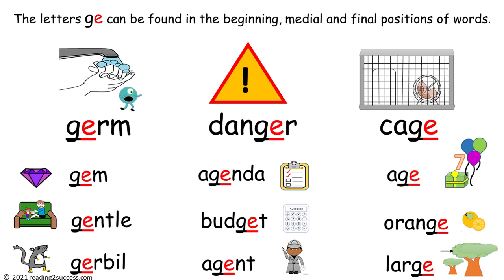Now, read with them these words that have the letters G-E that make the soft G sound. First, let's look at the words that have G-E in the beginning position: germ, gem, gentle, gerbil. Then, read the words that have the G-E in the medial position: danger, agenda, budget, and agent.